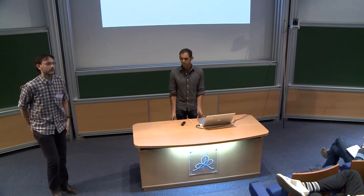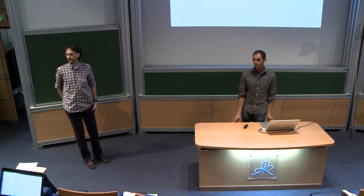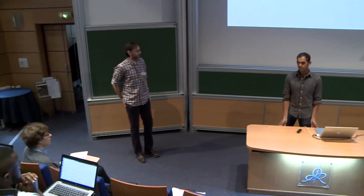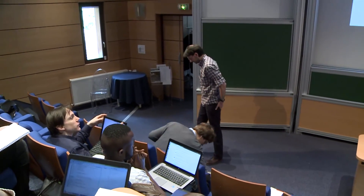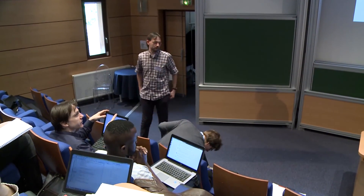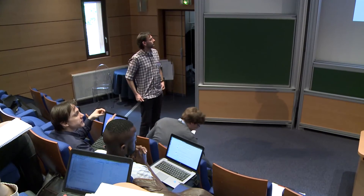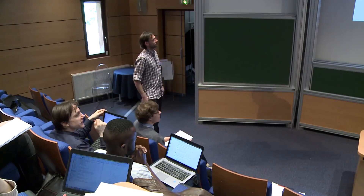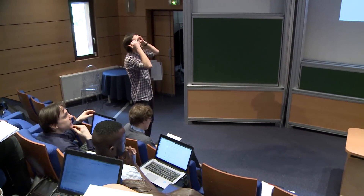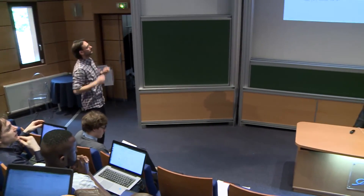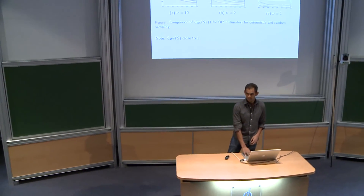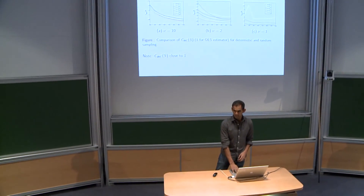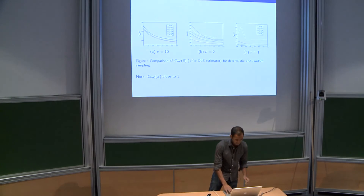We have time for questions. Audience question about leverage score sampling: can you show the simulations again? The fast version of leverage score sampling — SSHR, the pink line — is that the analog of SR but fast, using approximate leverage scores?